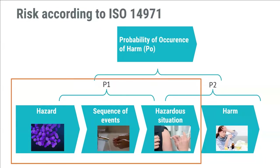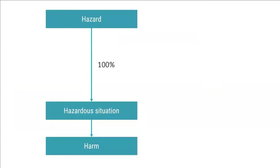Let's explore the tools available to reduce the likelihood of P1. The starting point for software risk analysis is to assume you have the worst software ever — it will always contribute to a hazardous situation. The good thing with this negative attitude is that there is a lot of room for improvement. By introducing a software risk control measure, the likelihood of a software failure becomes lower.